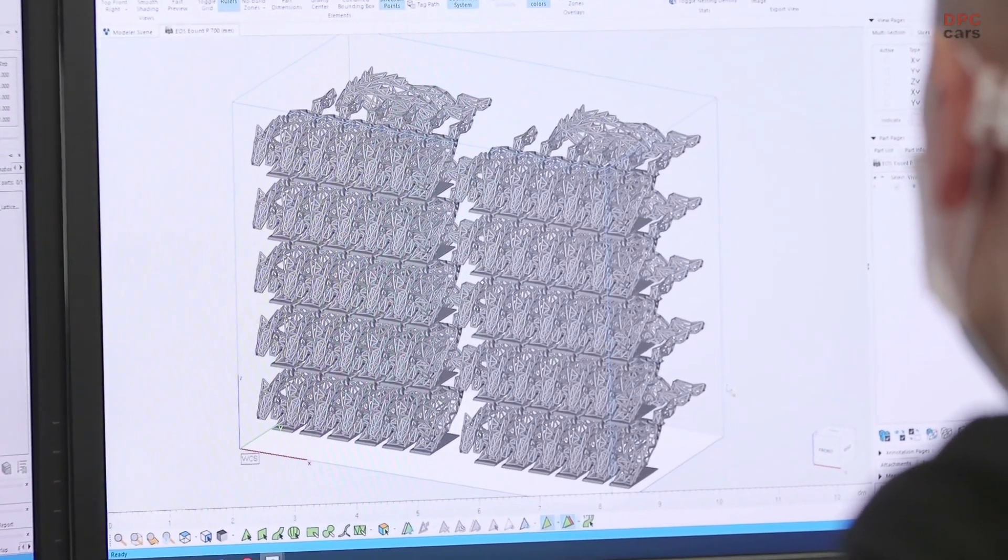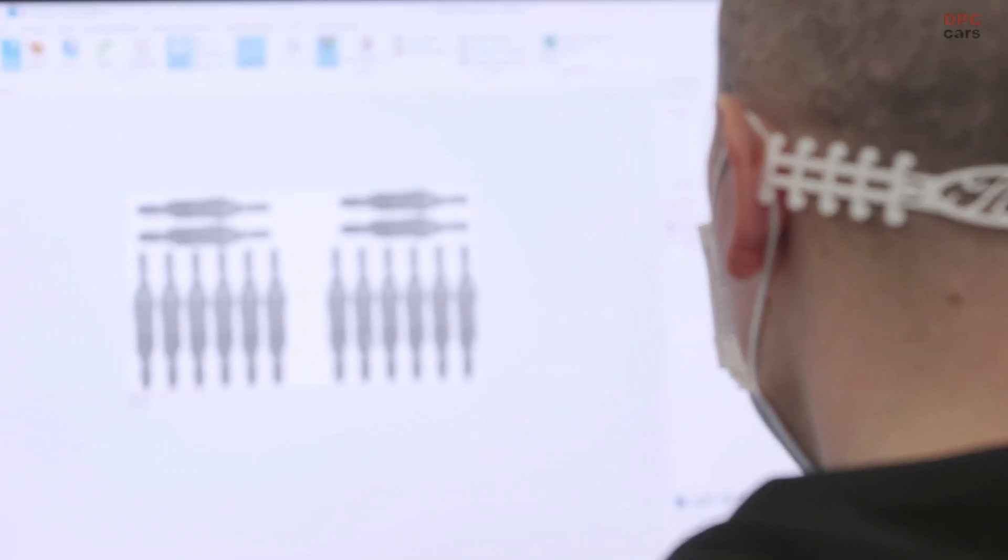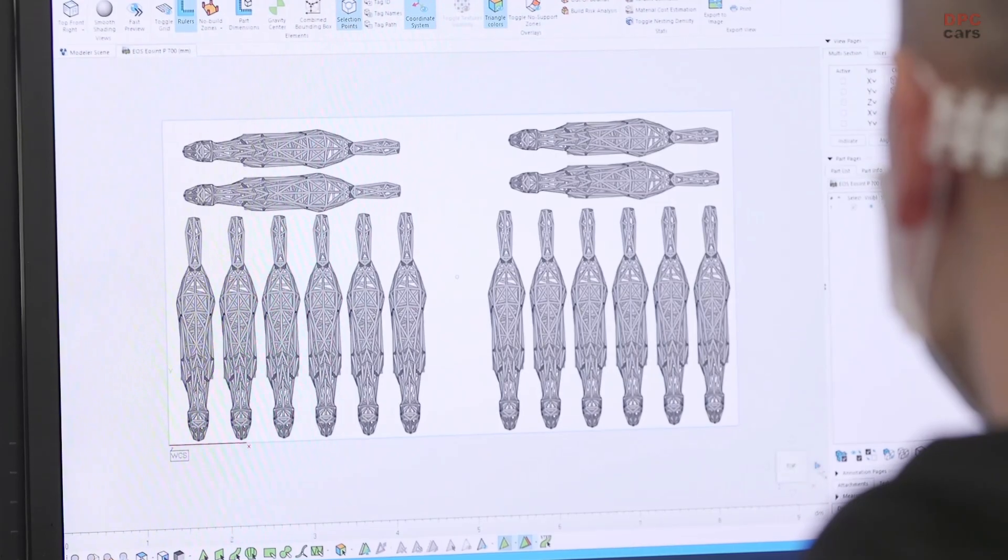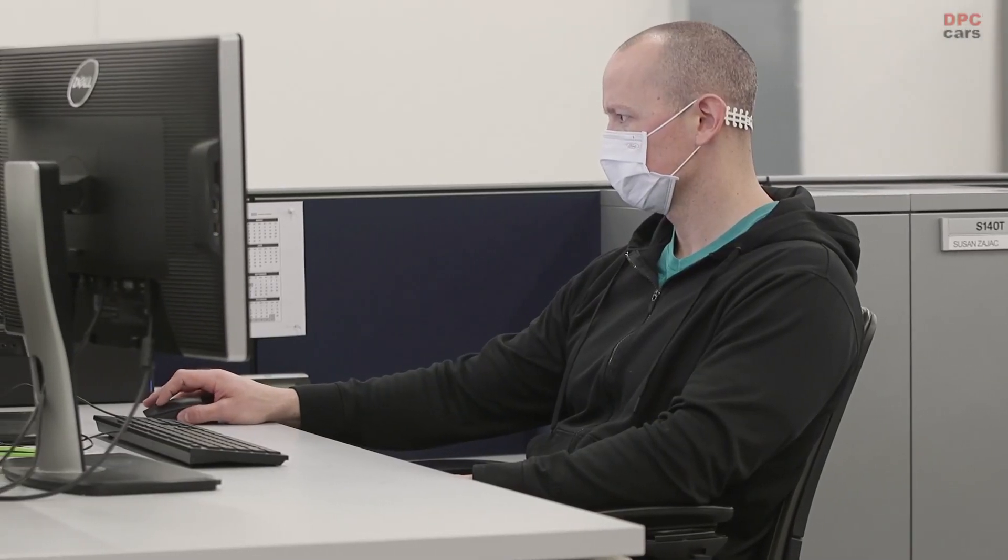Each Mustang Mach-E First Edition customer will receive a special collectible wireframe pony sculpture in the color corresponding to their vehicle's paint job, created with the help of 3D printing.